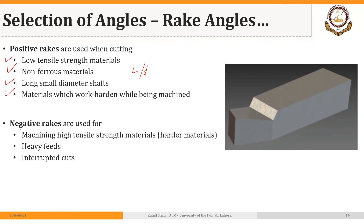Negative rake angles are used for machining high-strength materials — harder materials — where heavy feeds are used for roughing cuts, and when cutting is interrupted, such as in milling. In summary, for soft metals we use positive rake angles, and for harder workpiece materials, harder cutting tool materials, roughing cuts, or interrupted cuts, we use negative rake angles or larger included angles.